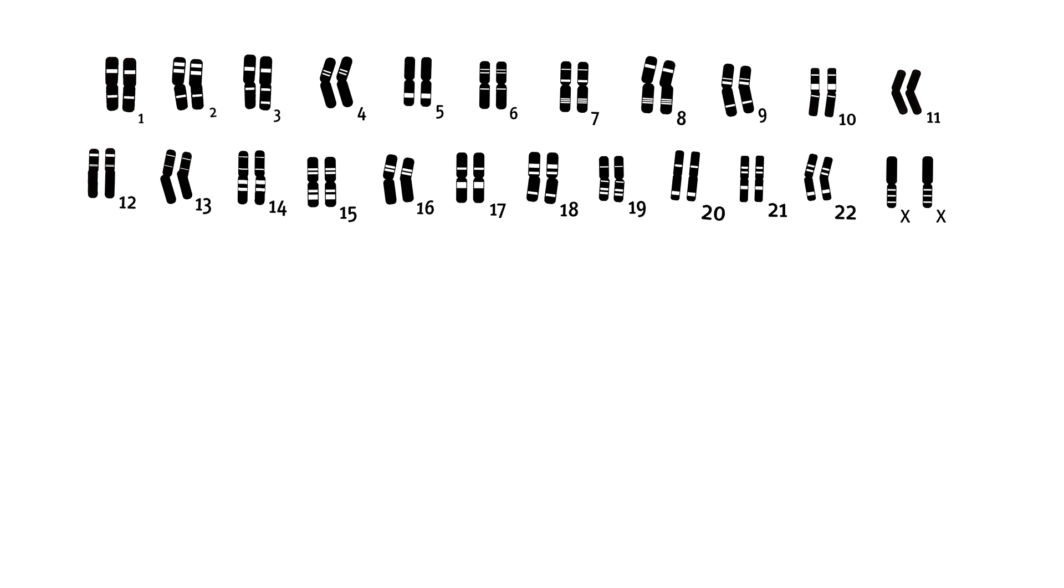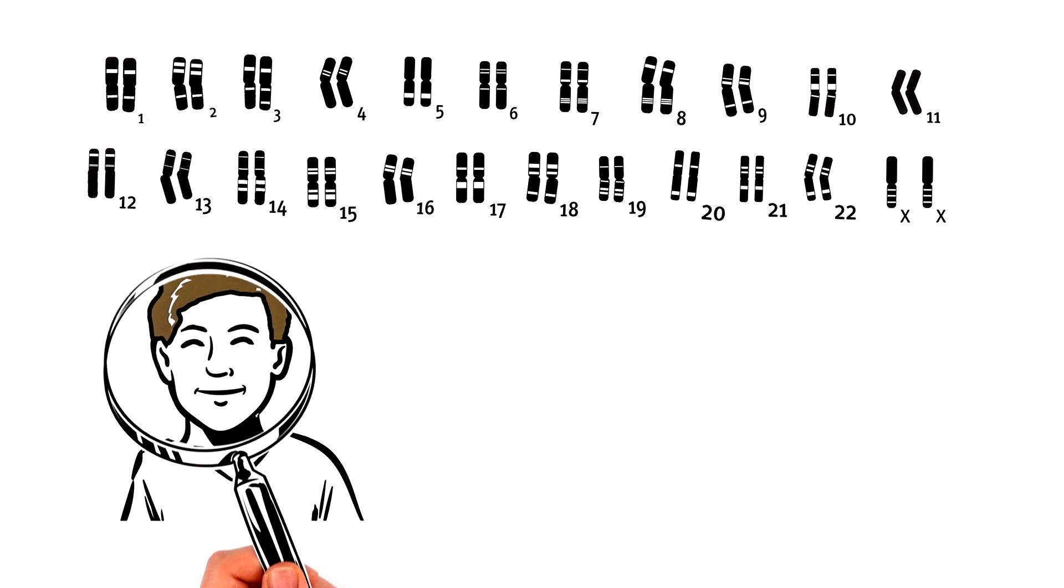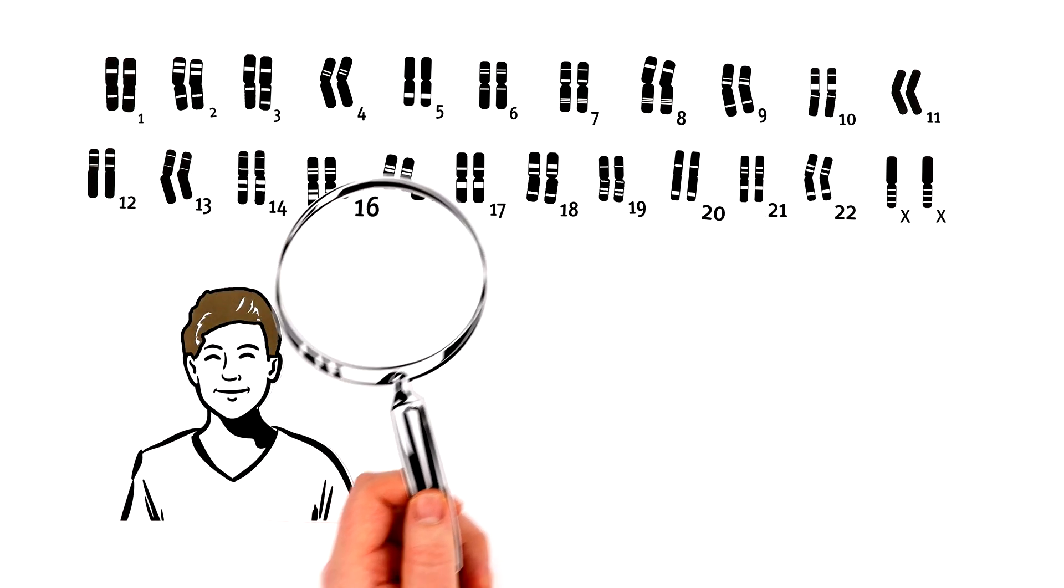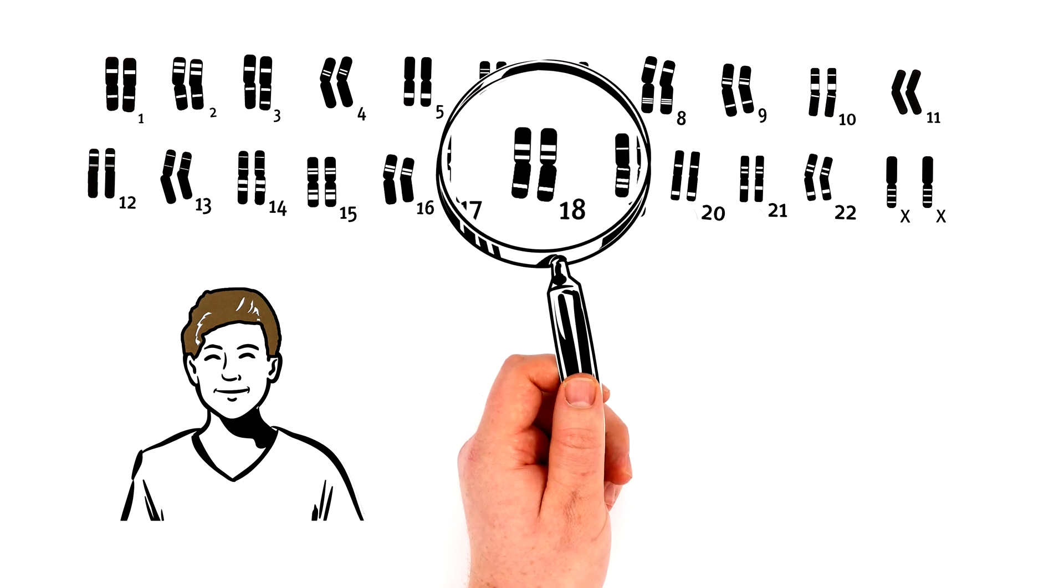Now, if we would search through Anton's chromosomes looking for the gene responsible for his hair color, we would find two variants of the same gene. One from his father, and one from his mother.